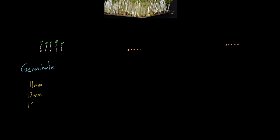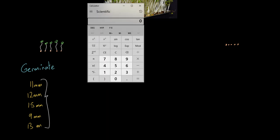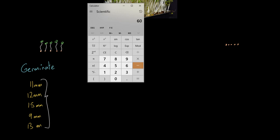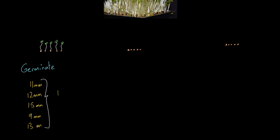You can then calculate an average. Let's say the heights after a few days are 11 mm, 12 mm, 15 mm, 9 mm, and 13 mm. To work out the mean, you add together all the values — 11 plus 12 plus 15 plus 9 plus 13 — and divide by the number of values, which is five. That gives exactly 12 millimeters as your mean.